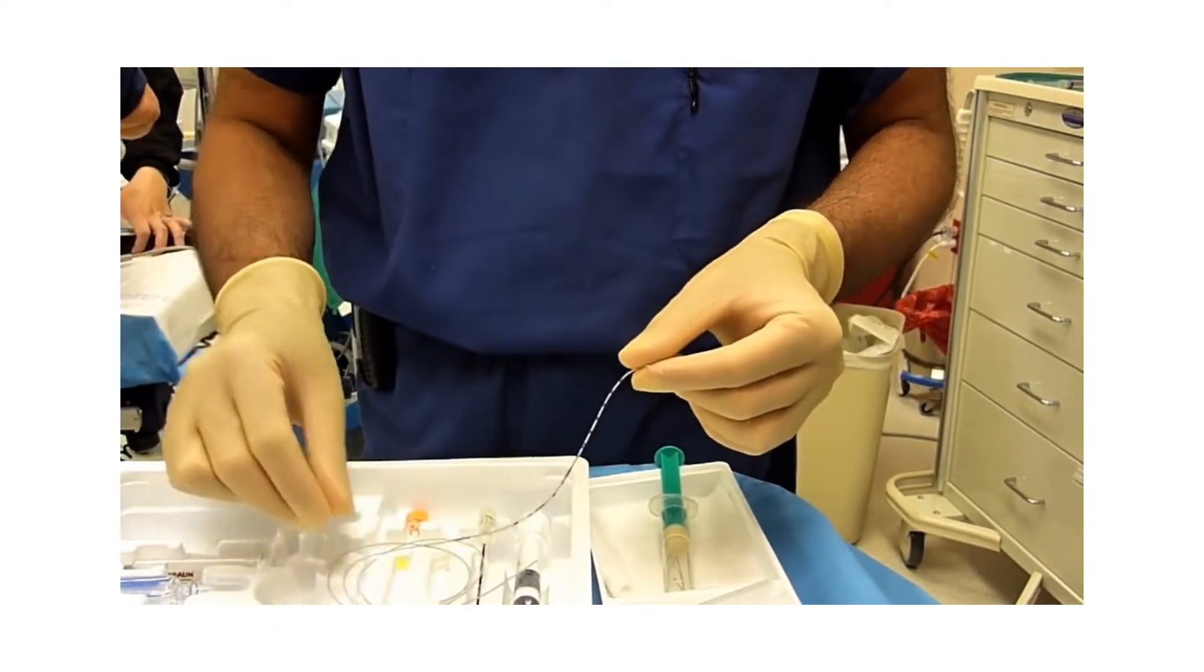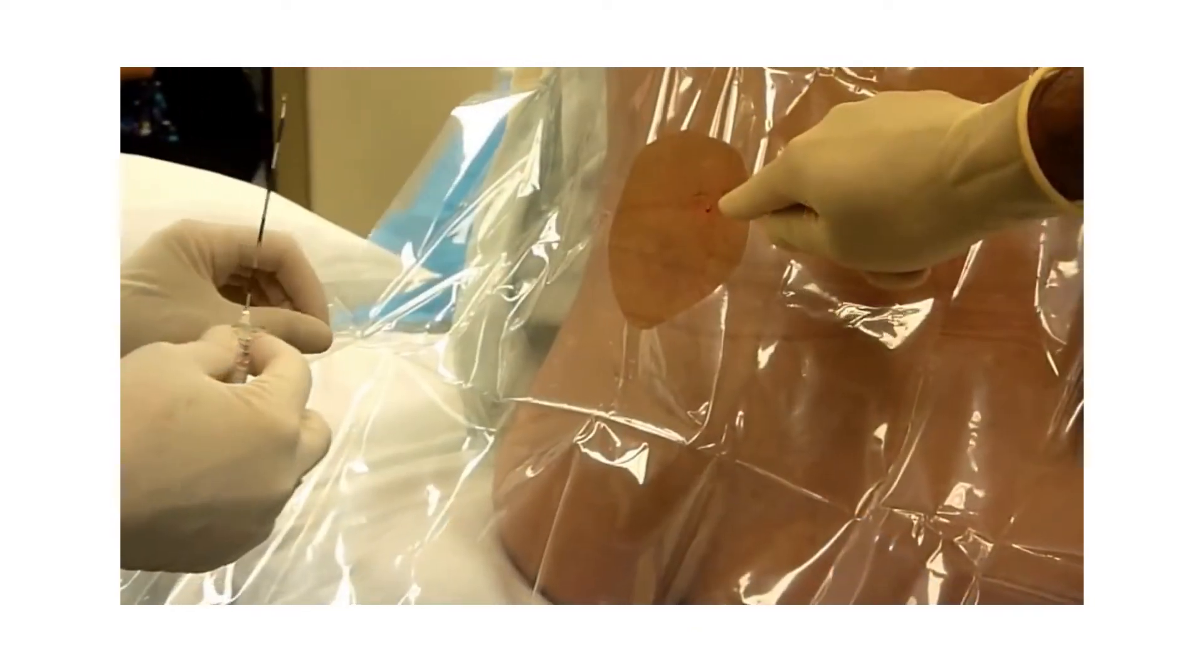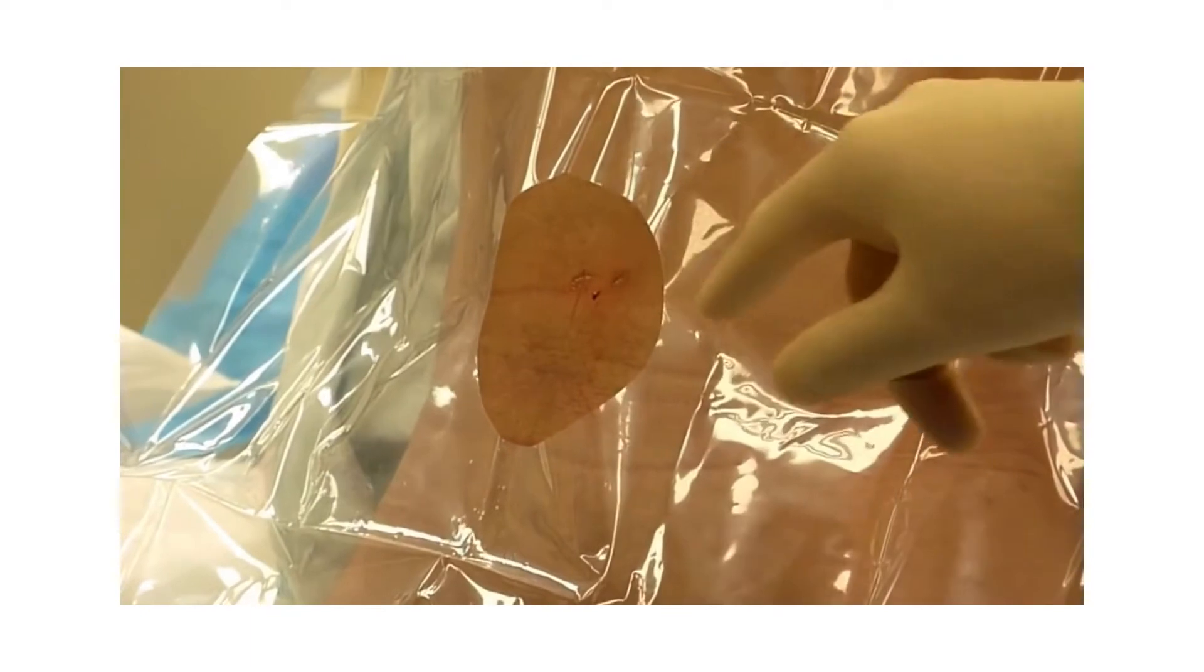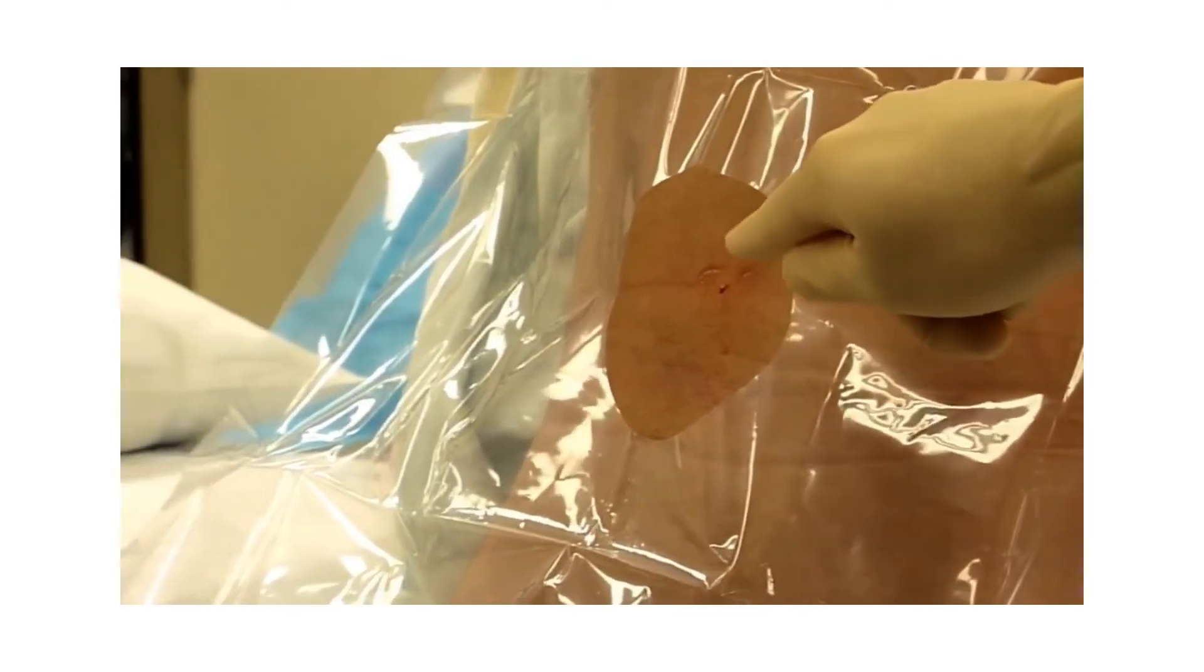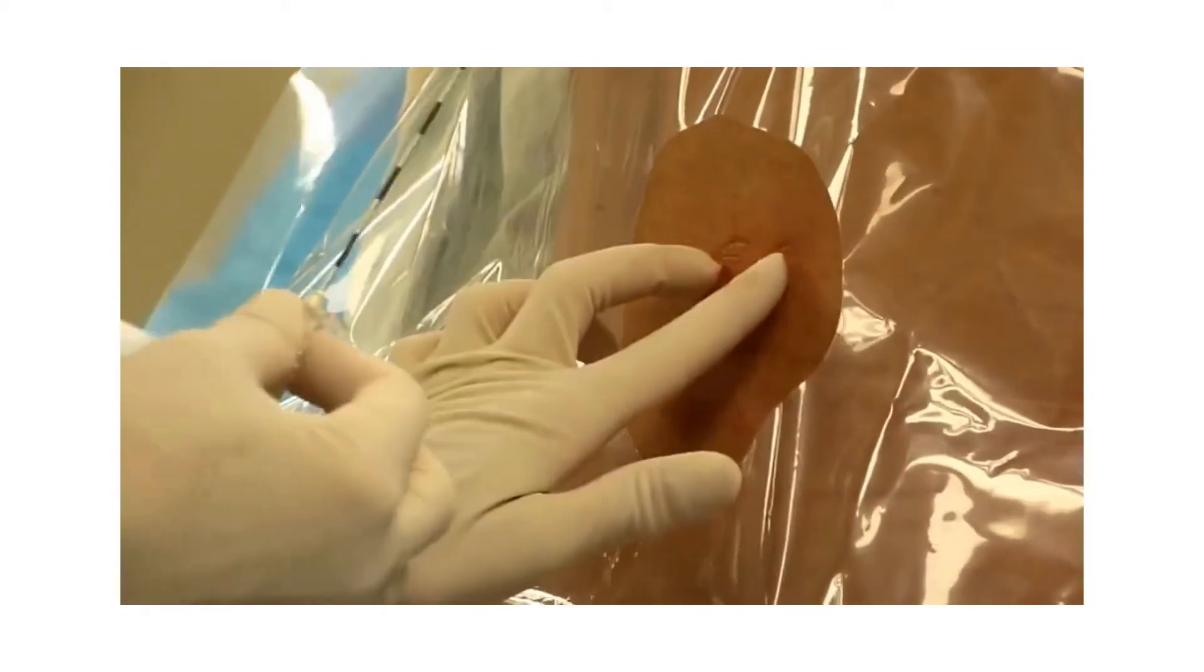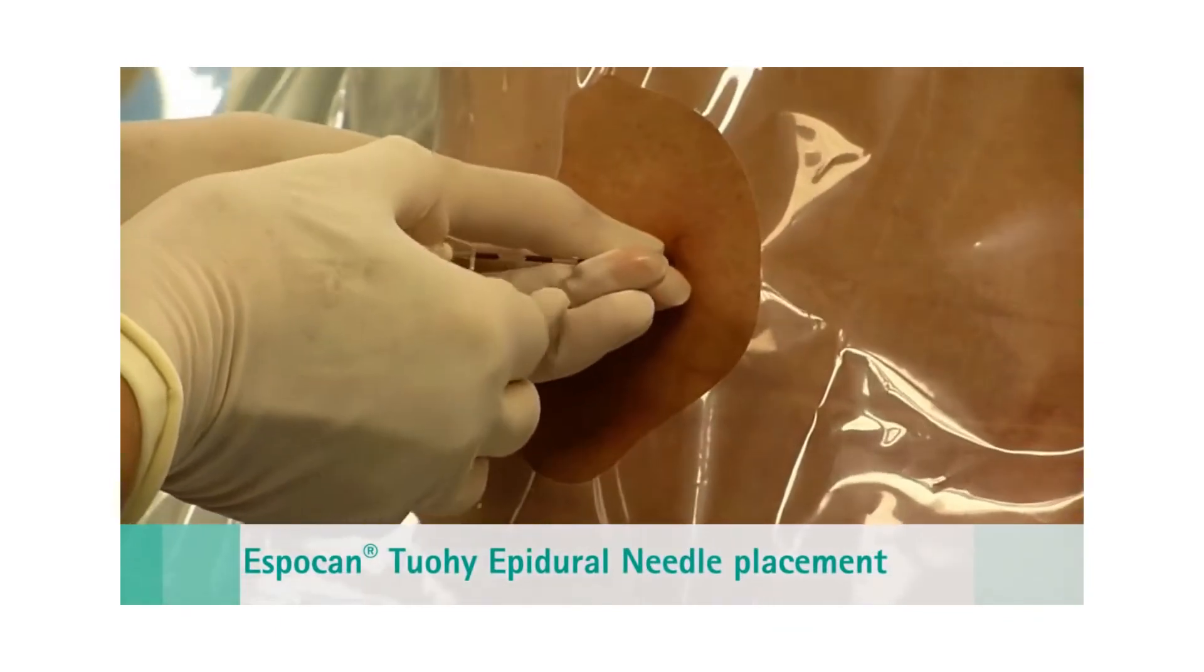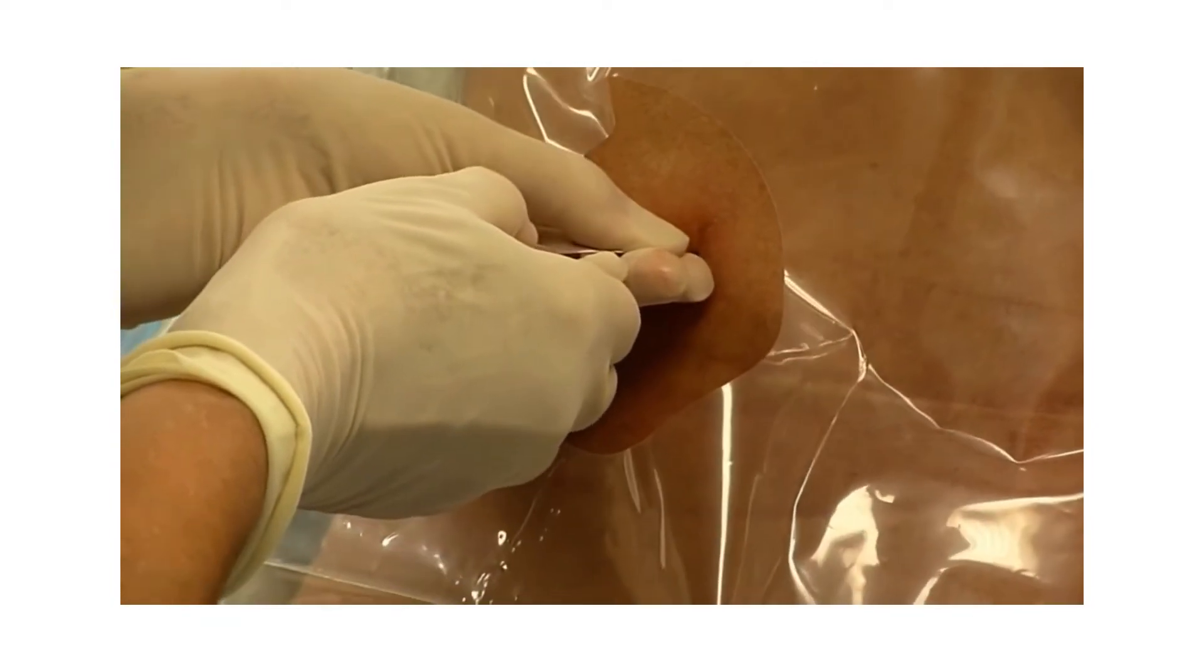Now let's move on to the procedure itself. As you can see, the skin has been disinfected, the lumbar interspace has been identified and anesthetized with local anesthetic. Now we'll proceed with insertion of the Espocan epidural needle, which after passage through the skin and underlying tissue is seated in the interspinous ligamentous tissue.